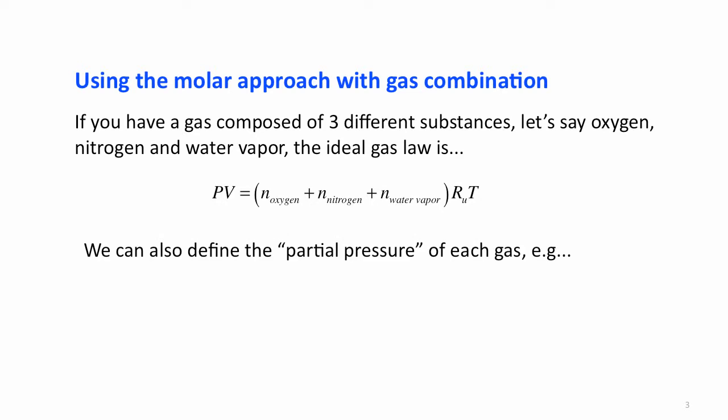Now the same idea allows us to find the partial pressure of each gas. The partial pressure of oxygen is the number of moles of oxygen times RT over V. This is the contribution to the total pressure that is made by the oxygen molecules in the gas.